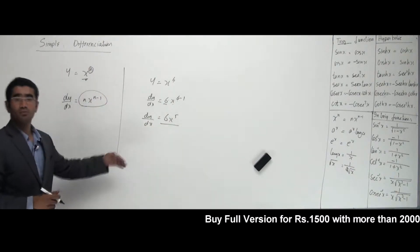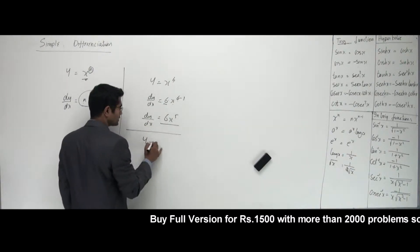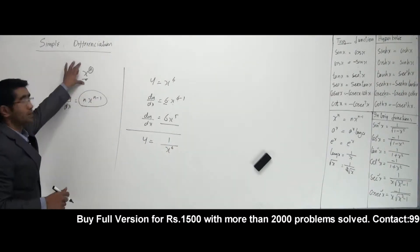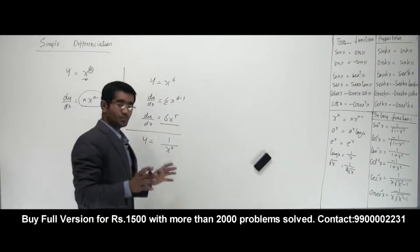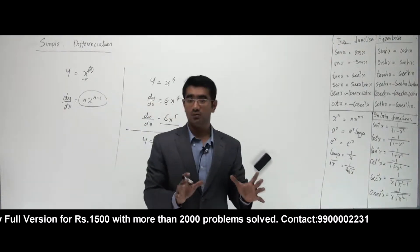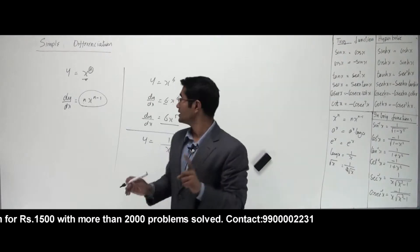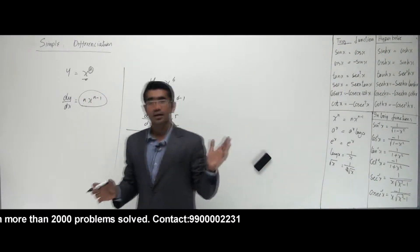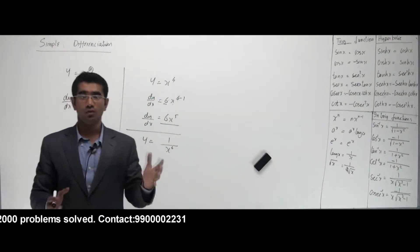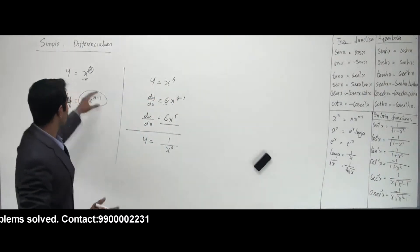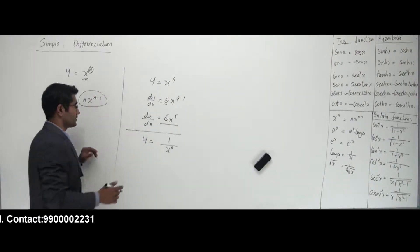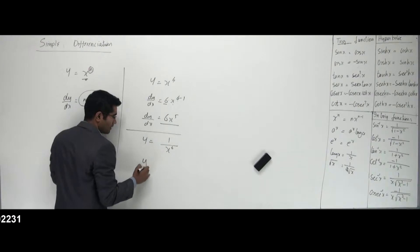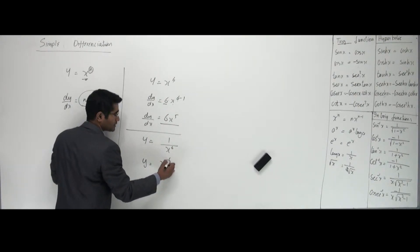Now what if my problem doesn't look like this? Let's say y is equal to 1 by x to the power 6 — this is not looking like the formula I have. Remember that for algebraic functions in terms of x, you can only differentiate x to the power n; otherwise you can't. If the question is given in any other form, make it look like that first. So this doesn't look like the standard form — I have to first make it look like that. Can I put x to the power 6 up? It becomes x to the power minus 6.